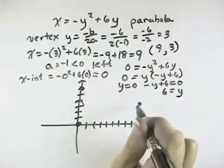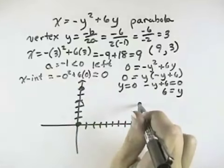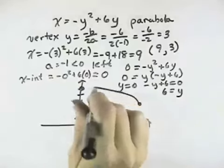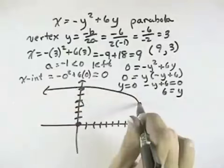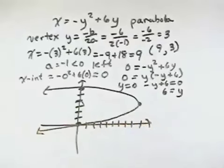which is the same intercept as our x-intercept. So here we have a parabola, a smooth curve that opens to the left from our vertex going through our intercepts.